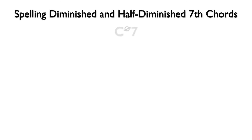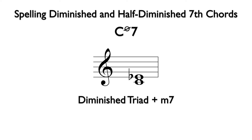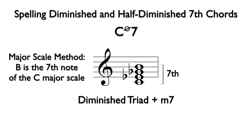Let's notate a C half-diminished 7th chord. The formula for a half-diminished 7th chord is a diminished triad plus a minor 7th. We build the diminished triad with two minor 3rds: C to E flat is a minor 3rd, and E flat to G flat is a minor 3rd. Now we add a note a 3rd above the 5th for the 7th. To identify the type of 7th from C to B, we can use the major scale method.